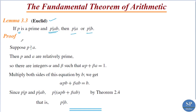To prove this, suppose p is a prime number and p divides ab. We have to show that p divides a or p divides b. Suppose p does not divide a. We have to show that p divides b. Since p does not divide a, we have p and a are relatively prime — that is, gcd(p, a) = 1.